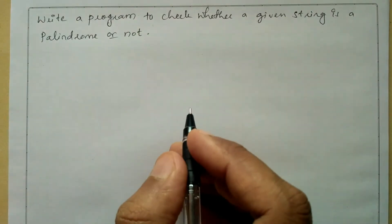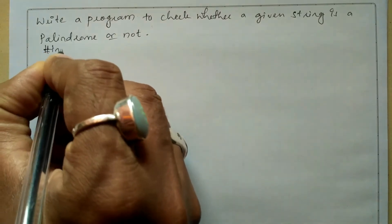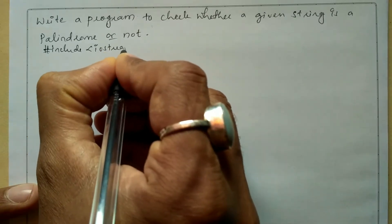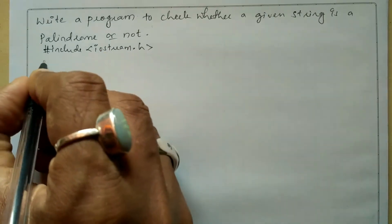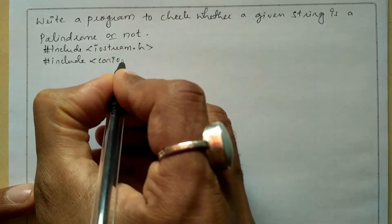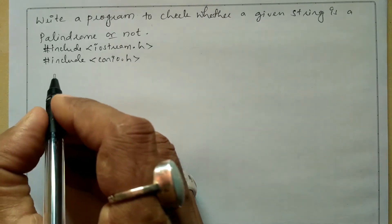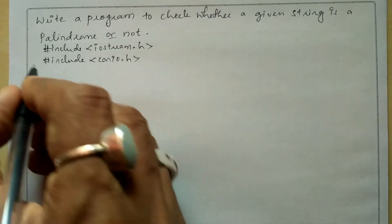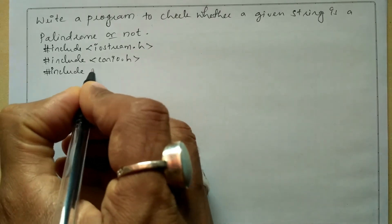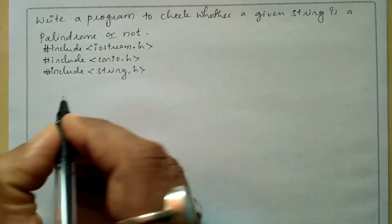Now let us write the preprocessor directives: #include in angle brackets iostream.h header file, and the next preprocessor directive is #include in angle brackets conio.h header file. And since we are using string built-in functions, we have to include one more preprocessor directive: #include in angle brackets string.h header file.